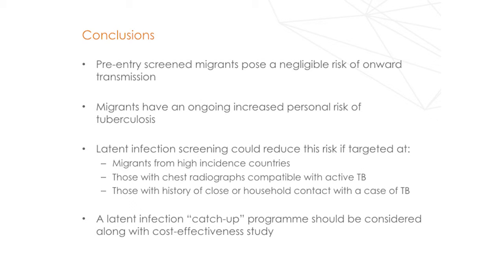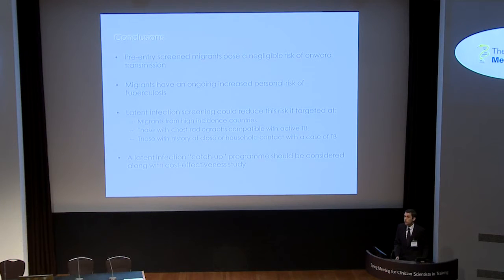In conclusion, pre-entry screening shows that migrants pose a negligible, very small risk of onward transmission, contrary to media and popular belief. But migrants do have an ongoing increased personal risk of tuberculosis. If a latent screening programme were introduced, the risk factor analysis identifies groups it should be targeted at: migrants from high-incidence countries, those with a chest X-ray suspicious of TB, and those with a close household contact history. Given the trajectory of TB risk over time, there should also be consideration of a catch-up programme for migrants who have been in the country for up to five or six years.